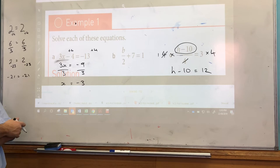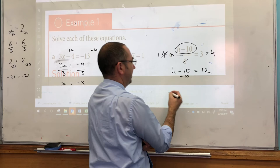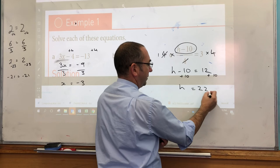Now it looks a lot more simple. We need to isolate h. To do that we've got a negative 10 here. If we add 10 to it it will become 0, so we add 10 to both sides, you get h equals 22. Okay and there's a whole lot of questions you can practice that on.